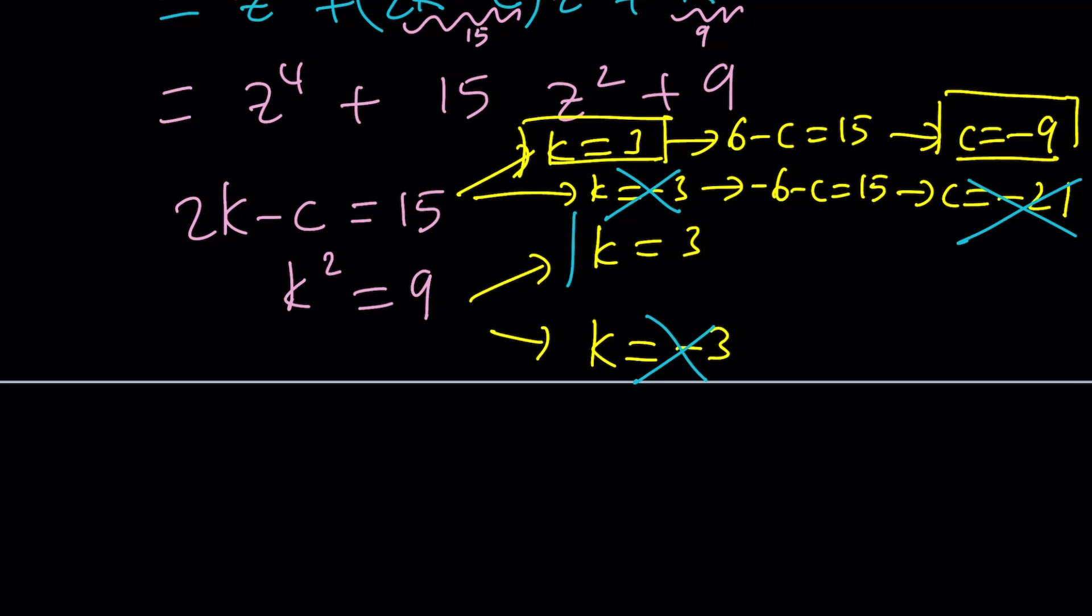Which means we end up with a single solution for k, and that is k equals 3. So k equals 3 is going to do the job, and c equals negative 9, of course, works along with that. Make sense?